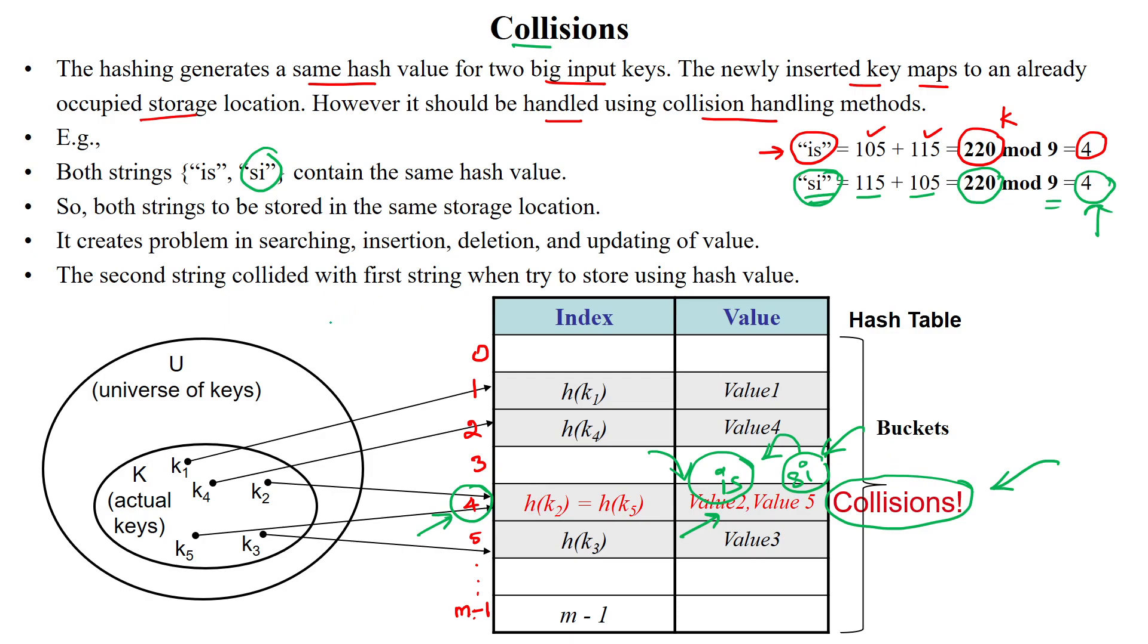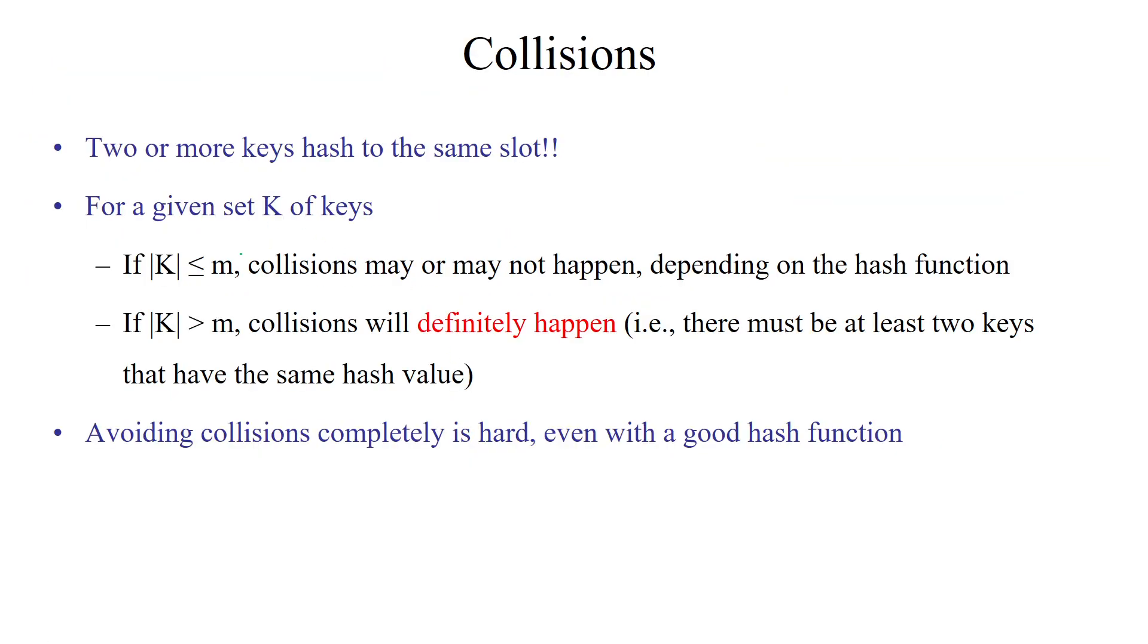This is the issue raised by static hashing. When will this happen? Whenever two or more keys are sharing the same slot, at that time collisions will occur.